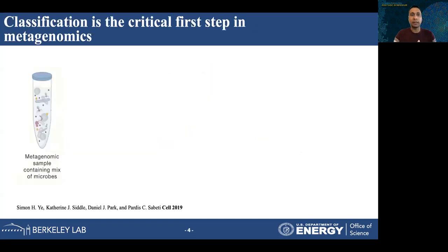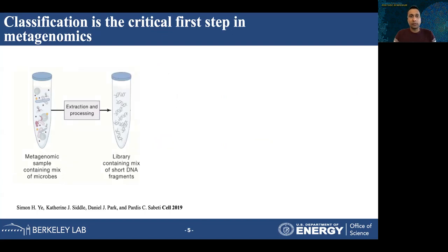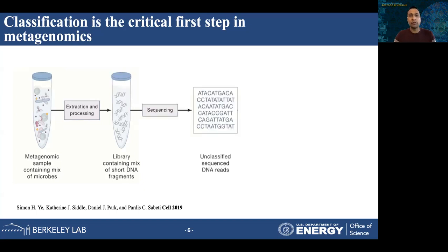Now let's understand the standard pipeline in metagenomic analysis. In the metagenomic pipeline, we first get a metagenomic sample containing a mix of microbes — bacterial, archaeal, viral, or even human species. The first phase consists of extraction and processing of these microbes into a library containing a mix of short DNA fragments. These short DNA fragments are sent through a sequencing instrument, and we get a large number of unclassified DNA sequences, also called reads.